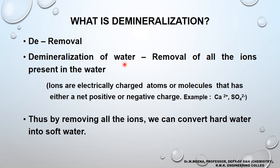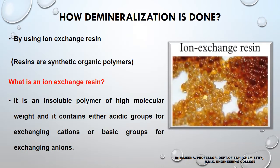Ions are electrically charged particles carrying either a positive or negative charge. By removing all the ions present in the water, we can convert hard water into soft water. Demineralization is done using ion exchange resins, which are synthetic organic polymers — insoluble polymers of high molecular weight that carry either acidic or basic groups for exchanging ions. In appearance, the resin looks like small bead-like structures.